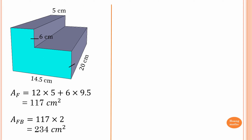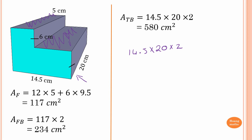Looking at the top panel, it is exactly the same as the area of the base. So the area of the base is 14.5 times 20, and since the top and base are the same, we multiply by 2. That gives us 14.5 times 20 times 2, which equals 580 square centimeters.